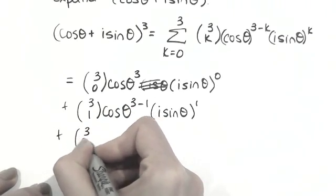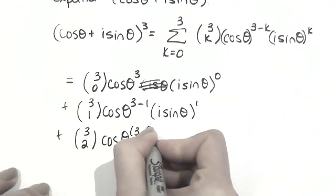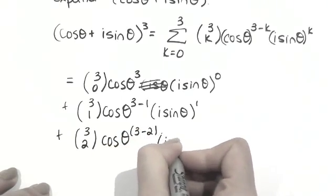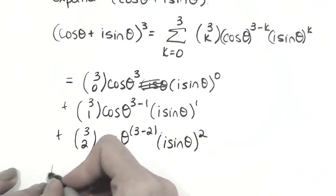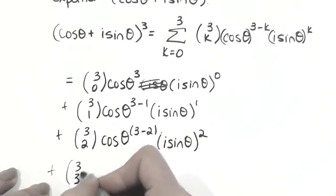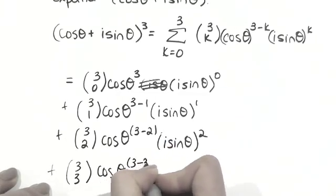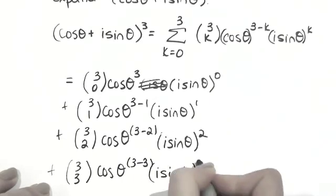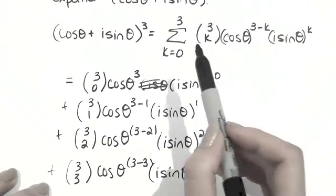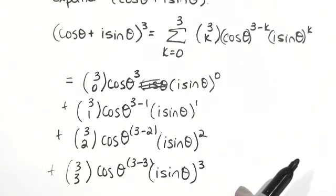Then i sine theta 3 minus 1, and i sine theta to the first power. Then we have 3 choose 2, cos theta 3 minus 2, and i sine theta squared. And then our last one is 3 choose 3, cos theta 3 minus 3, i sine theta cubed. So I've just subbed in k equals 0, k equals 1, k equals 2, k equals 3, and added them together. Now we want to simplify.